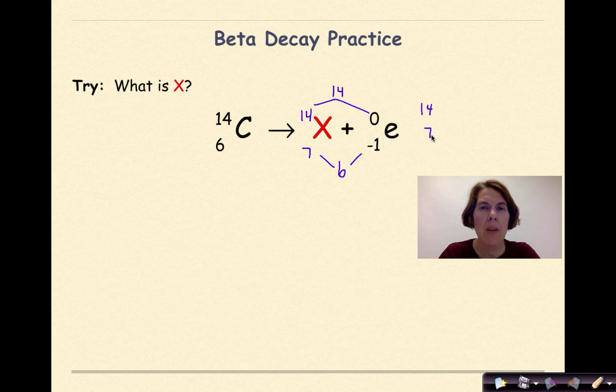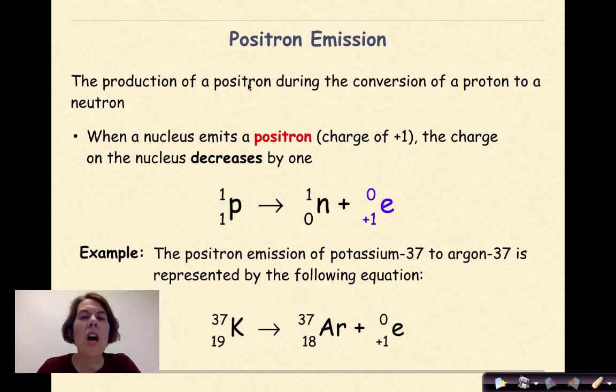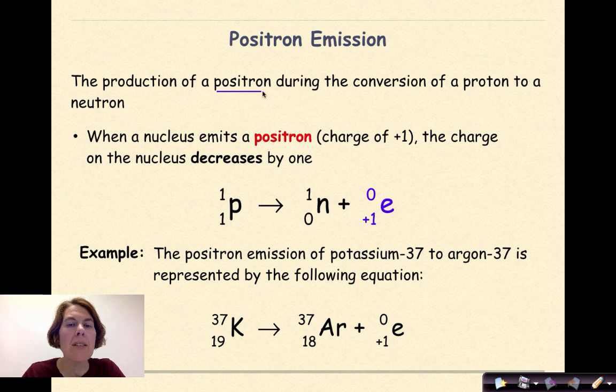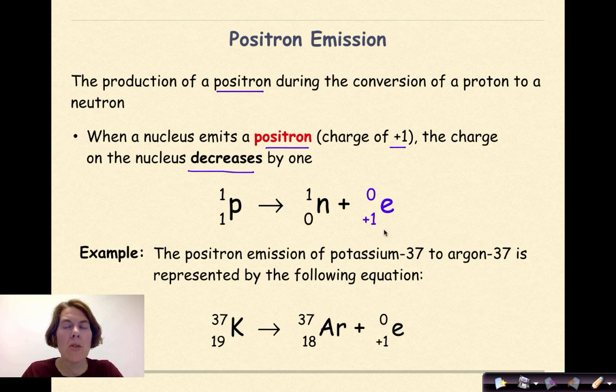Let's talk about positron emission: the production of a positron during the conversion of a proton to a neutron. When a nucleus emits a positron with a charge of plus 1, the charge on the nucleus is going to decrease by 1. So here I have a proton becoming a neutron, and a positron is emitted. Here's an example. The positron emission of potassium-37 to argon-37 is represented by the following equation. So I start out with potassium-37. I'm going to go to argon-37. Again, notice the mass numbers don't change, but my atomic number has gone down by 1 because 18 plus 1 is 19.